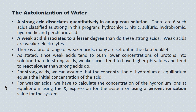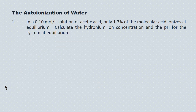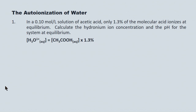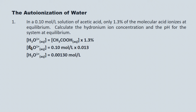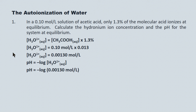Consider a 0.10 moles per liter solution of acetic acid that ionizes to 1.3%. Calculate the hydronium ion concentration and pH. The concentration of hydronium equals the initial concentration of acetic acid times its percent ionization. Substituting in, we get a hydronium ion concentration of 0.00130 moles per liter. The pH is the negative log of hydronium ion concentration — the negative log of 0.00130 moles per liter — giving a pH of 2.89, reported to two significant digits.